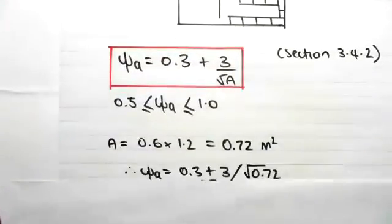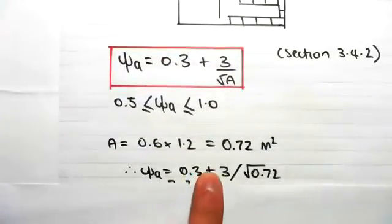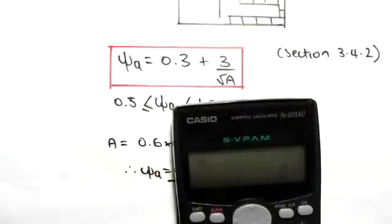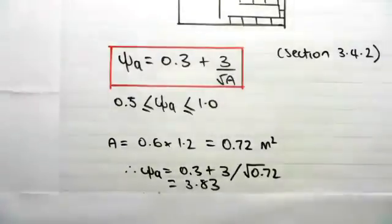Working out this reduction would be psi A equals 0.3 plus 3 on the square root of 0.72. So 3 divide square root of 0.72 plus 0.3 gives us 3.83.